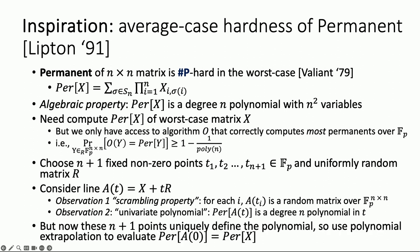Second is the univariate polynomial property: the permanent of A(t) is a degree-n polynomial in t, inherited from the algebraic property of the permanent itself. So we take our faulty box O, evaluate it at these n+1 points to compute the permanent of A(t₁), A(t₂), and so on. Because we have a univariate polynomial of degree n specified at n+1 points, we use polynomial extrapolation to reconstruct the permanent of A(t), then evaluate at 0 to get the permanent of X.